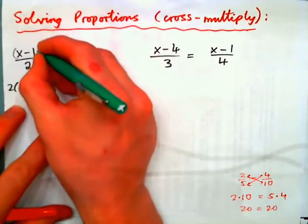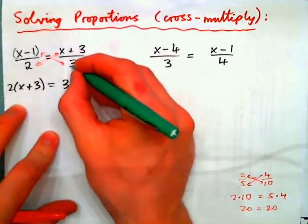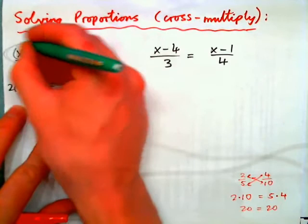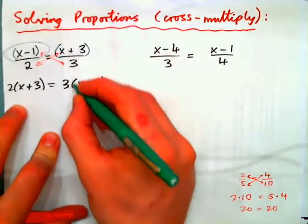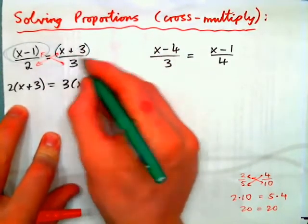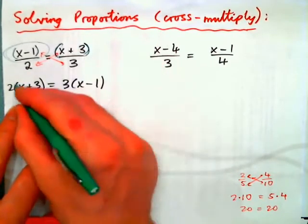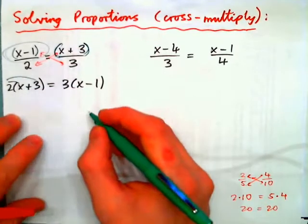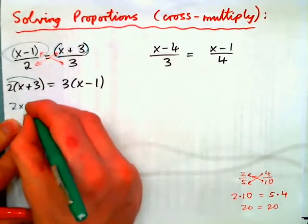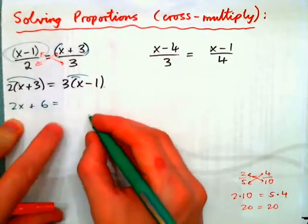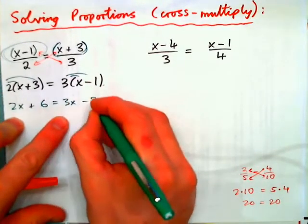This whole thing is being divided by 2. If I go 3 times the top, I need to multiply 3 times the whole top. This whole thing is being divided by 3. The whole thing is part of the fraction. So if I multiply 2 times that, I must multiply 2 times the whole thing. And so that's why I need parentheses. So I need to get 2x plus 6 equals distribute 3x minus 3.